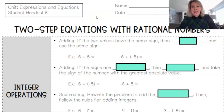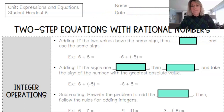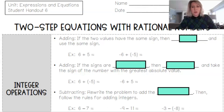Welcome back. Today's lesson is about two-step equations with rational numbers, meaning there could be fractions or decimals. This is similar to our two-step equation lesson prior, except now we're going to have a little bit higher level of numbers — more complex numbers than just integers or whole numbers to work with. Let's go ahead and review our integer operation rules before we begin.